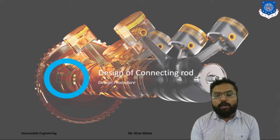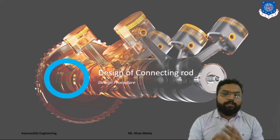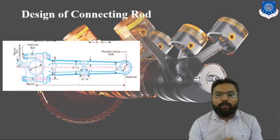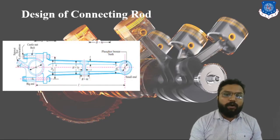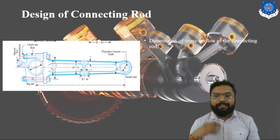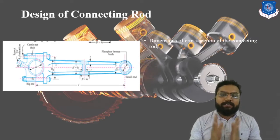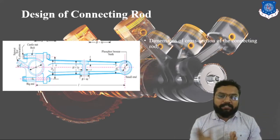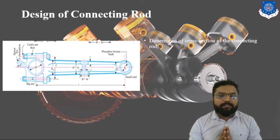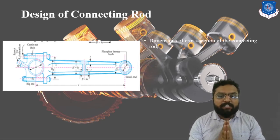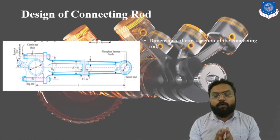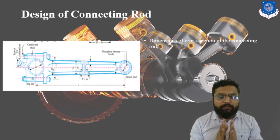Now we will set up the procedure for designing this connecting rod. To design this connecting node, our first step is to understand what it is and what dimensions we are going to work with. A connecting node is a connecting component between the piston and crankshaft, and it is also subjected to buckling because it is considered a short structural part.